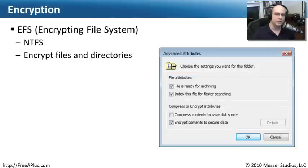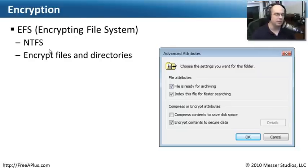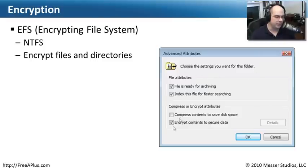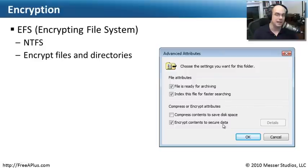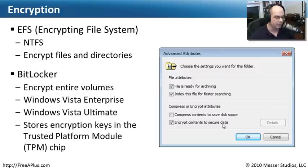The Windows operating system has a few ways to encrypt data on your computer so no one else can see it. One of those ways is through EFS — the Encrypting File System — which is available when running the NTFS file system on your disk. That allows you to encrypt files and directories on your hard drive. If you right-click on a folder or file, you'll find advanced attributes where you can simply check a checkbox to encrypt those contents and secure the data. There's also a process to back up the certificates used for this encryption — just in case you lose the hard drive — so you can recover and use your certificate to regain access.